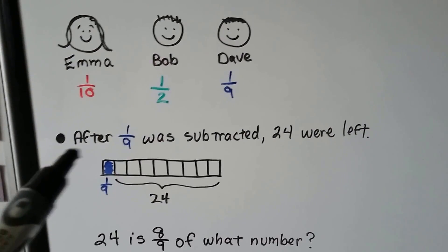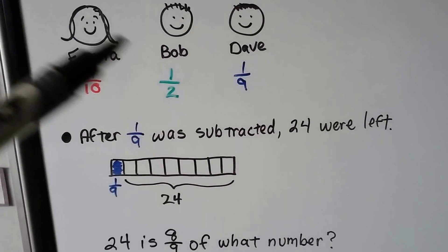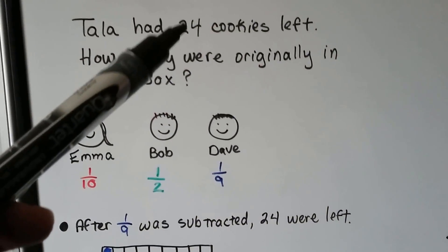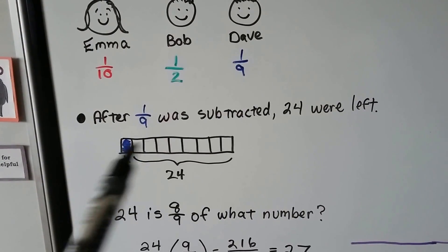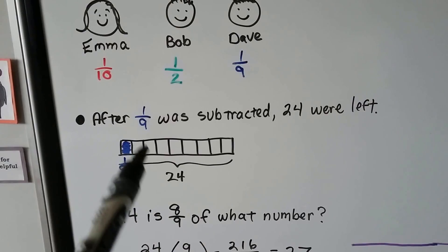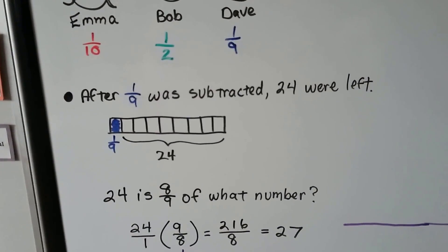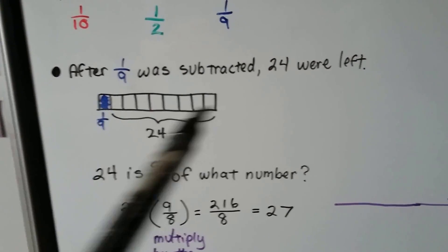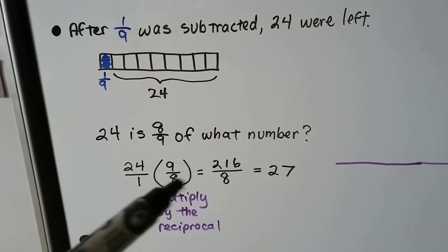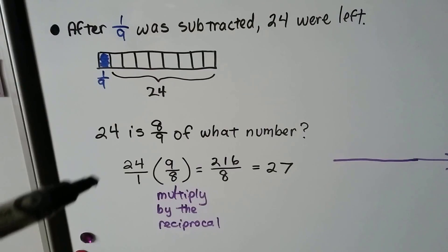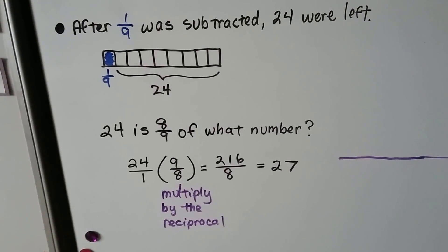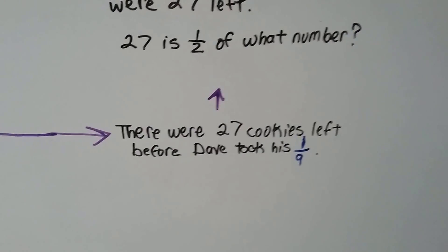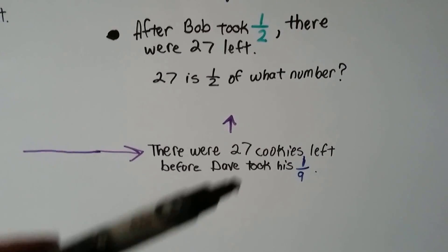So what we're going to do is work backwards — starting with Dave and going back to Emma. It said twenty-four cookies were left after Dave took his one-ninth. So if we had ninths, here's nine-ninths as one whole. If we take away one-ninth and twenty-four are left, that means twenty-four is eight-ninths. So twenty-four is eight-ninths of what whole number? We do twenty-four over one times the reciprocal, nine-eighths. Twenty-four times nine is two-hundred sixteen, one times eight is eight. We divide two-hundred sixteen by eight and get twenty-seven. So there were twenty-seven cookies left before Dave took his one-ninth.